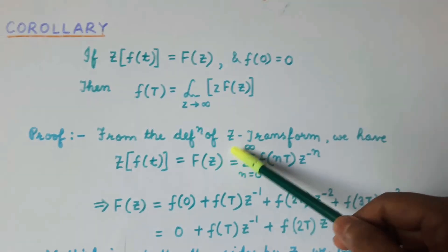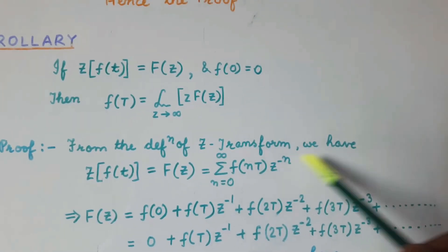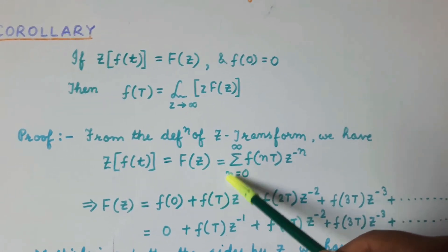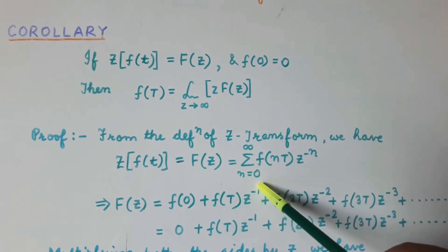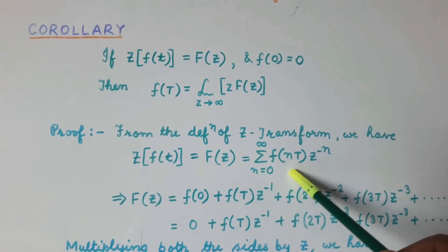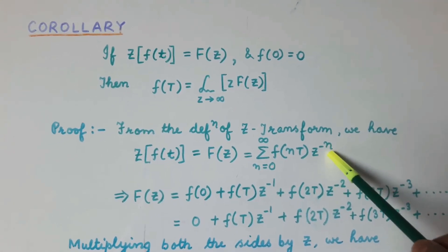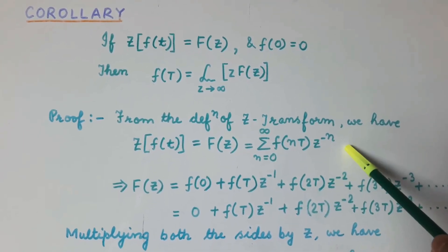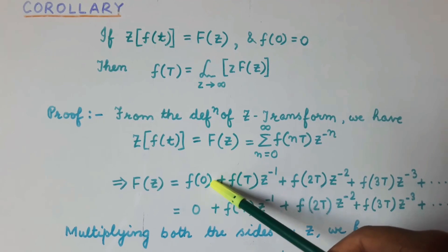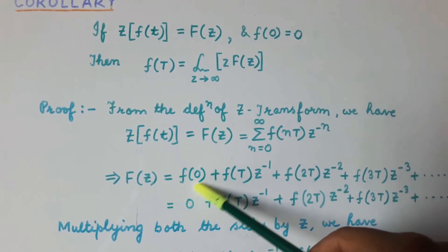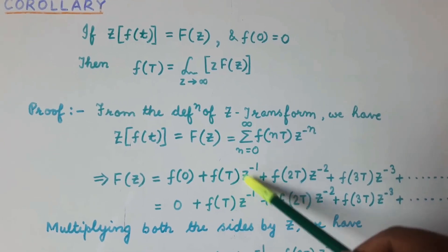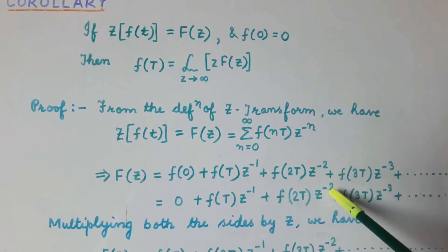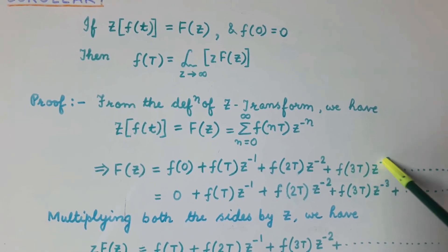Again, from the definition of Z-transform, we know that the Z-transform of f(t) can be written as F(z), equal to summation n equals 0 to infinity of f(nT) into z to the power minus n. Substituting the different values of n, this equation comes out to be F(z) equal to f(0) plus f(T) z to the power minus 1 plus f(2T) z to the power minus 2 plus f(3T) z to the power minus 3, and so on.